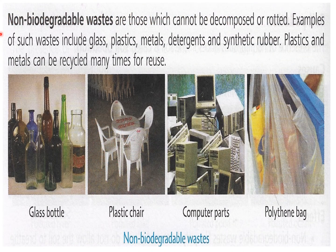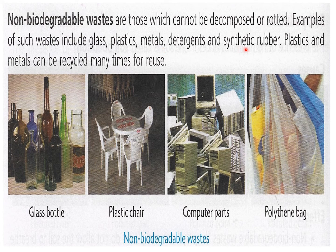Non-biodegradable waste are those which cannot be decomposed or rotted — they are called non-biodegradable waste. Examples of such waste include glass, plastics, metals, detergents and synthetic rubber. Plastics and metals can be recycled many times for reuse, so they do not cause soil pollution. But detergents are chemicals which pollute the soil forever, and glass is also non-biodegradable waste.